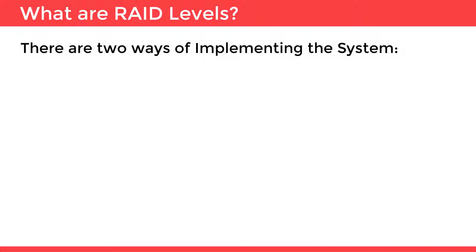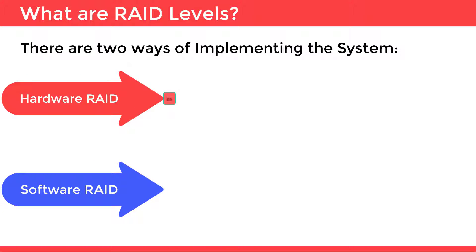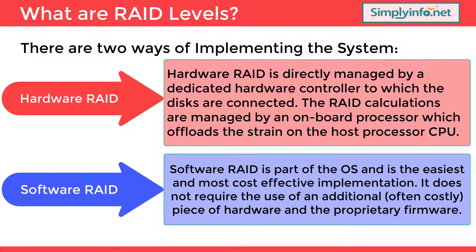There are two ways of implementing the system. One is hardware RAID, another one is software RAID. Hardware RAID is directly managed by a dedicated hardware controller to which the disks are connected, and the RAID calculations are managed by an onboard processor which offloads the strain on the host CPU. Software RAID is part of the OS and is the easiest and most cost-effective implementation — it does not require the use of an additional, often costly, piece of hardware and proprietary firmware.